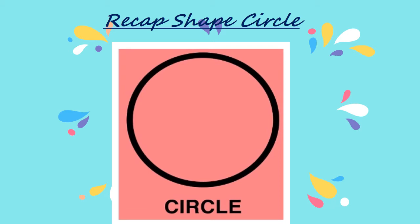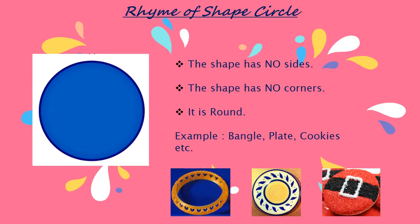Now to practice the circle shape, take your index finger and make a circle shape in the air. Start in one direction, going in a round form, and come back to join the point where you started — it will make a circle shape. The shape which has no sides, no corners, and is round is called a circle shape. Examples include a bangle, plate, cookies, and more.